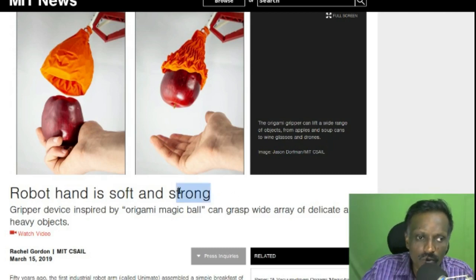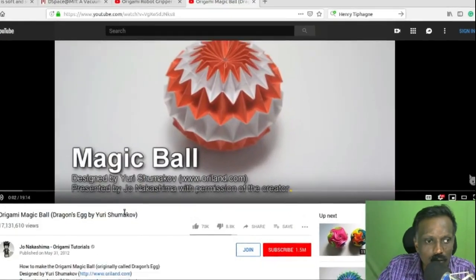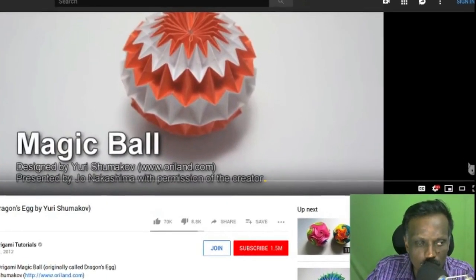It is developed with inspiration from the Origami Magic Ball. Their paper title is Vacuum Driven Origami Magic Ball Soft Gripper. It's a famous concept, the origami magic ball.